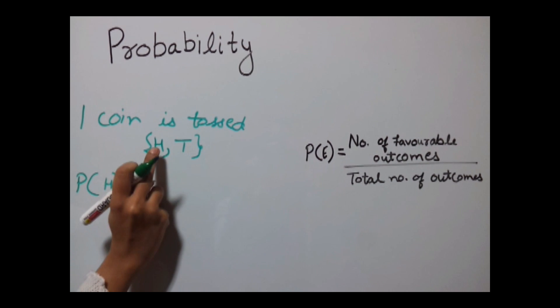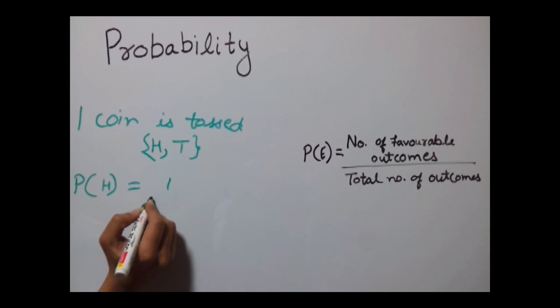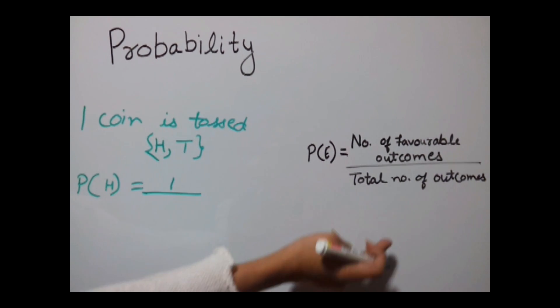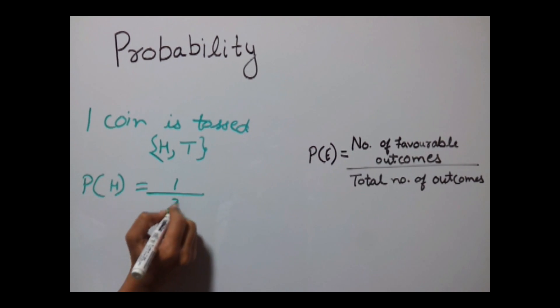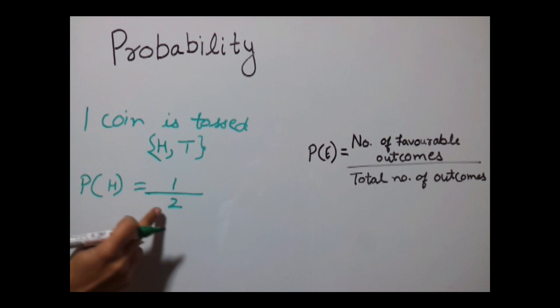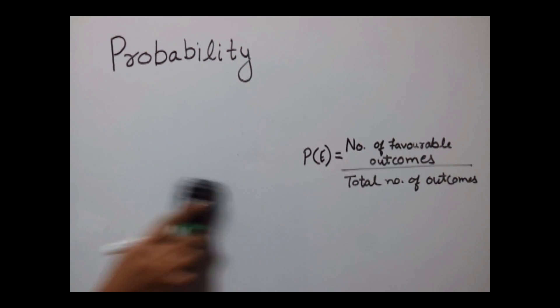Probability of head is only one over here, put one, divided by total number of outcomes. Total number of outcomes are two, one and two. So probability of head is one by two. Let's have one more example.